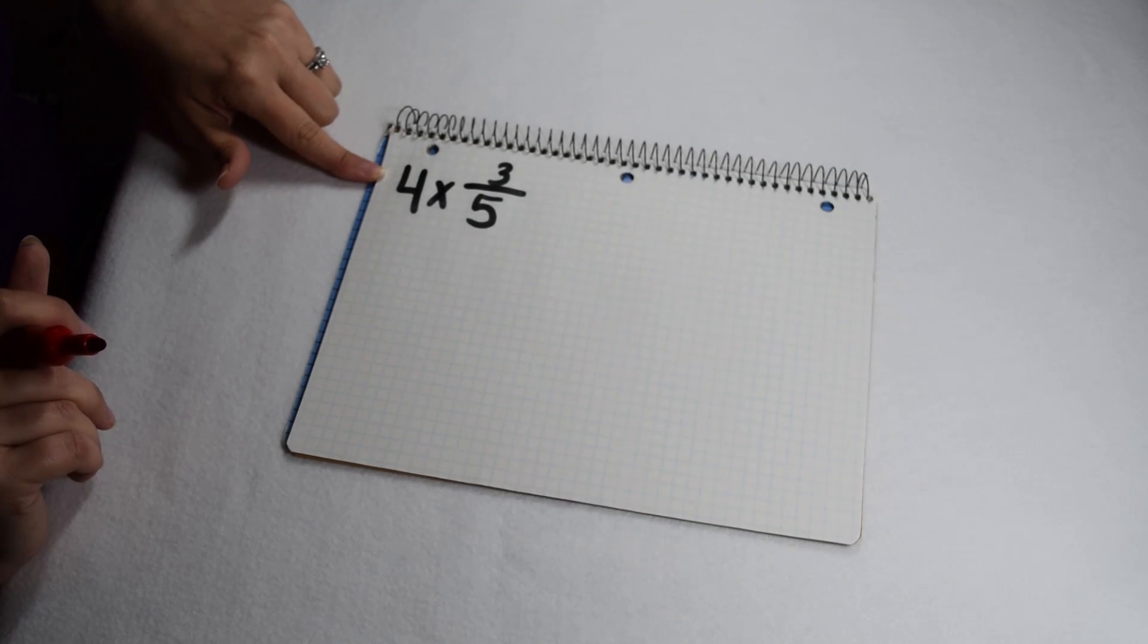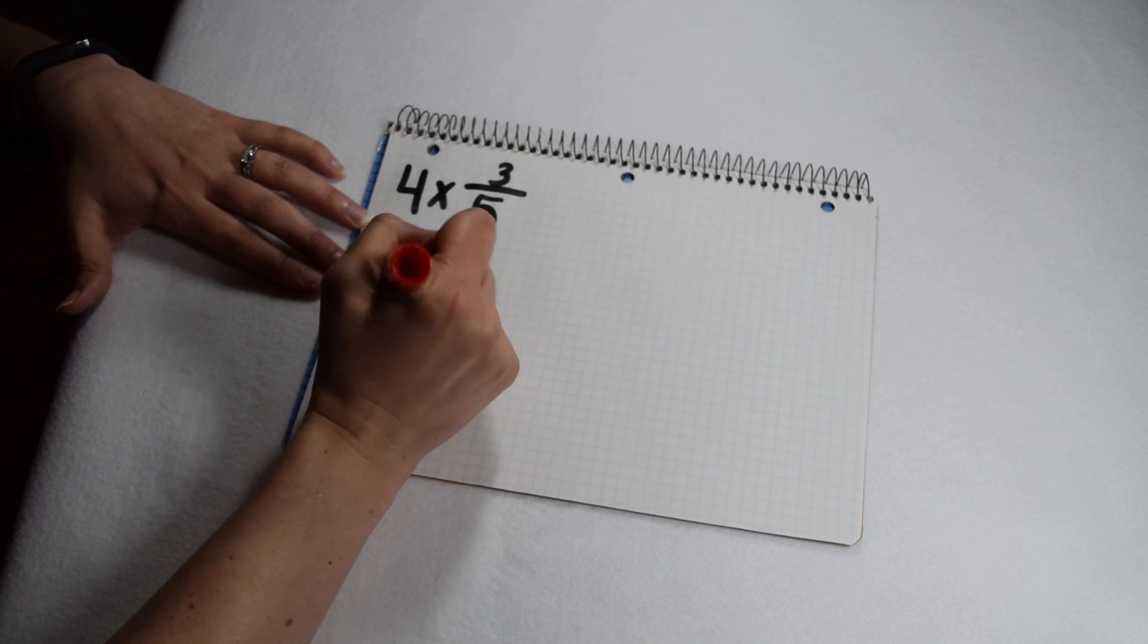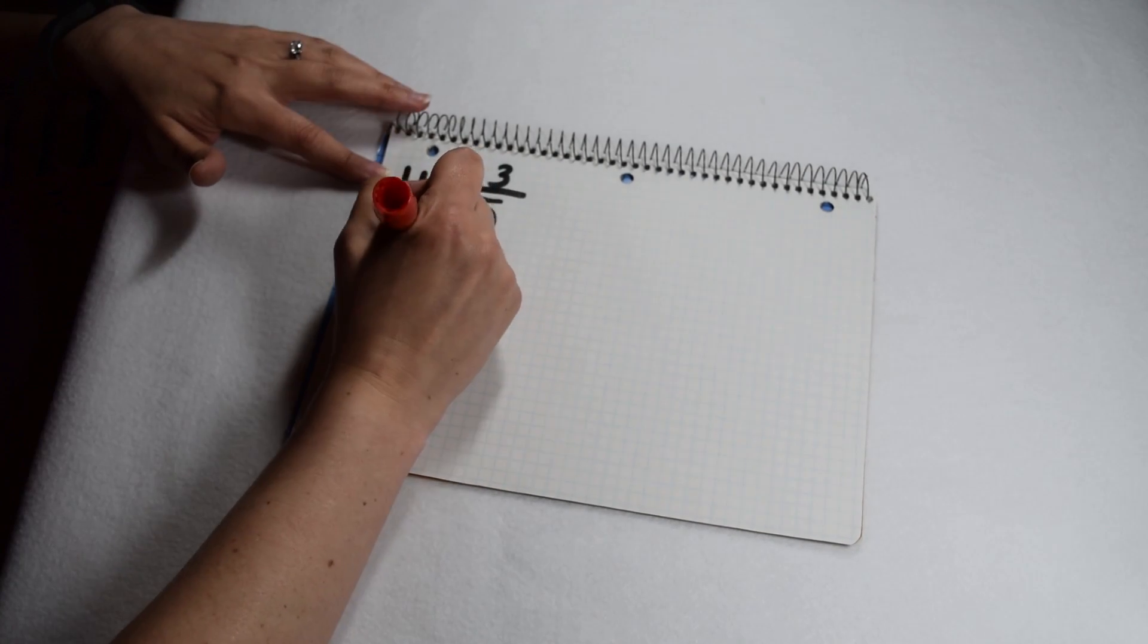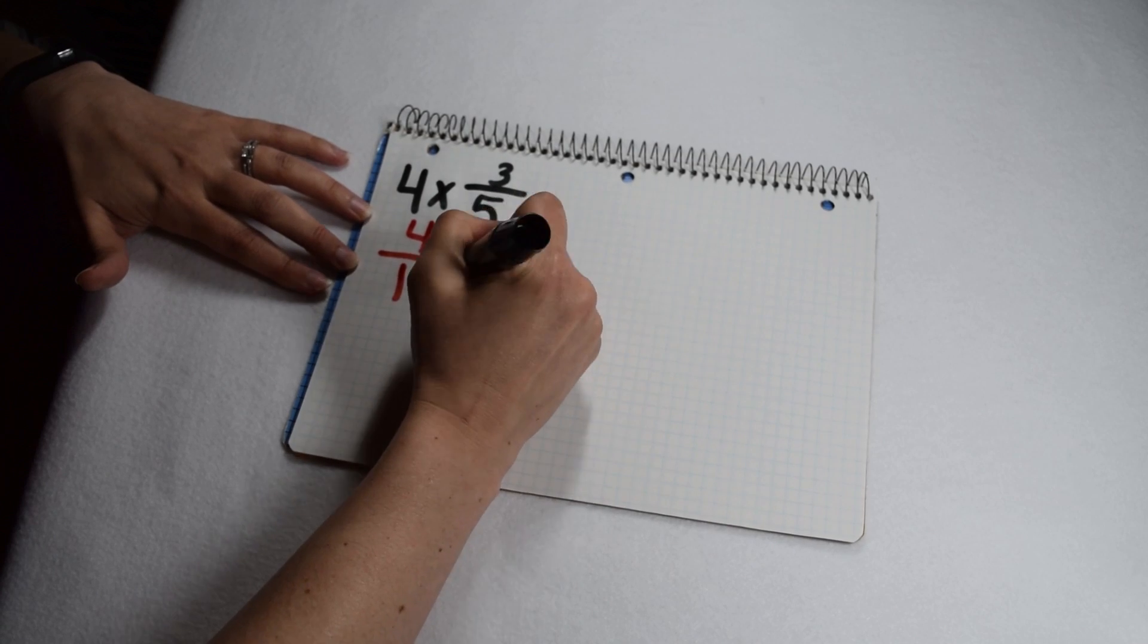We're multiplying four times three fifths. The first thing we notice is a whole number four doesn't have a numerator and denominator, so we need to change four into a fraction. To make any whole number into a fraction, we use a denominator of one, and our whole number becomes our numerator. I can then multiply that times three fifths.